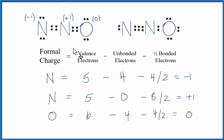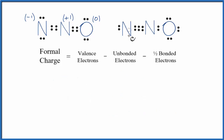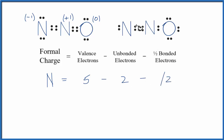So we have the formal charges for this first structure. Now let's calculate them for the second one. Whichever structure has formal charges closer to zero will be the more favorable or likely Lewis structure. Let's start with this nitrogen here with the triple bond. Nitrogen has five valence electrons. Unbonded, we have just two. We subtract one half of the bonded electrons: two, four, six. So five minus two is three, minus three gives a formal charge of zero on this nitrogen.